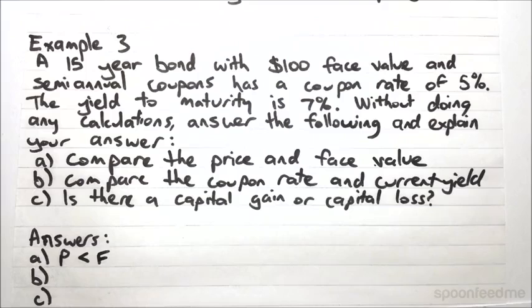But the most important part of the question is, and explain your answer. Why is it that the coupon rate being less than the yield to maturity tells us that the price is less than the face value? And so, to answer that...